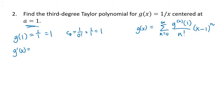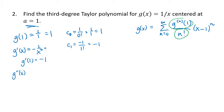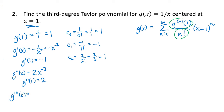We always take the derivative value and divide by n factorial. The second derivative: writing −1/x² as −x^(−2), the derivative is 2x^(−3). Plugging in 1 gives 2, so c2 = 2/2! = 2/2 = 1. The third derivative is g‴(x) = −6x^(−4). Plugging in 1 gives −6, so c3 = −6/3! = −6/6 = −1.